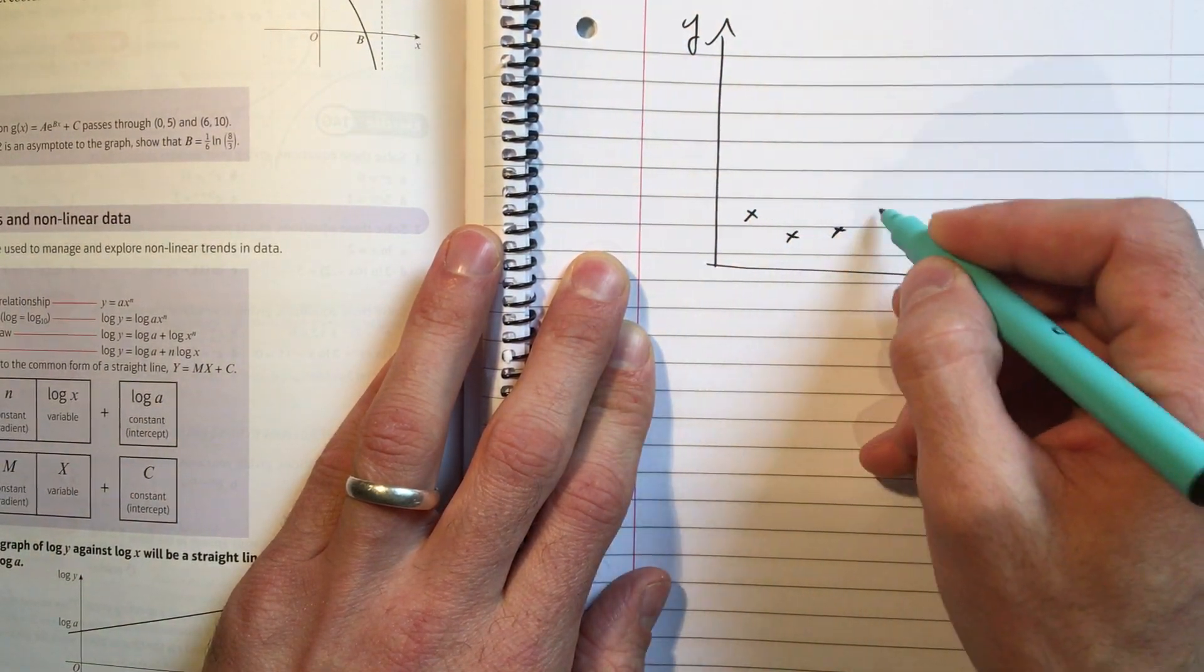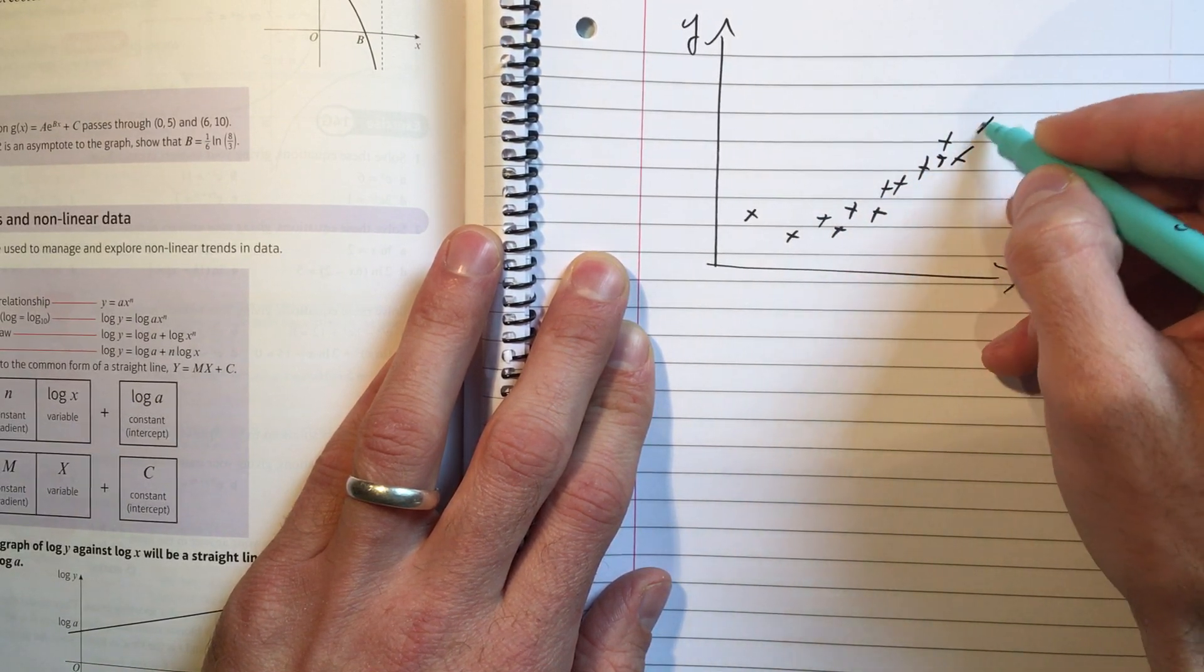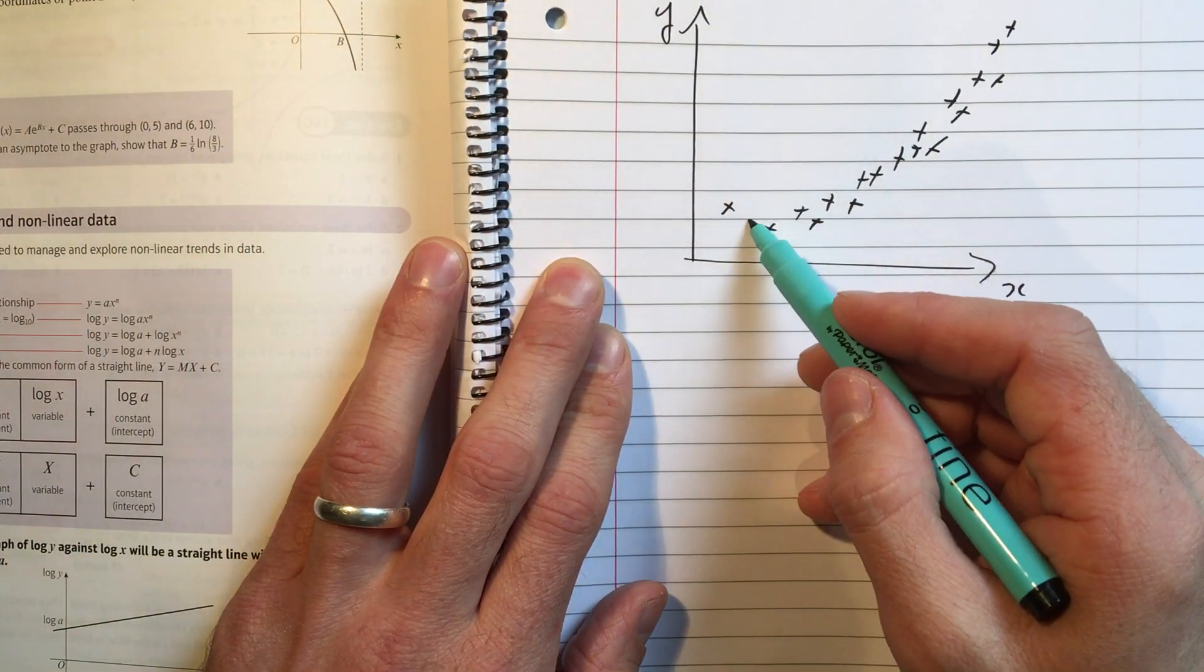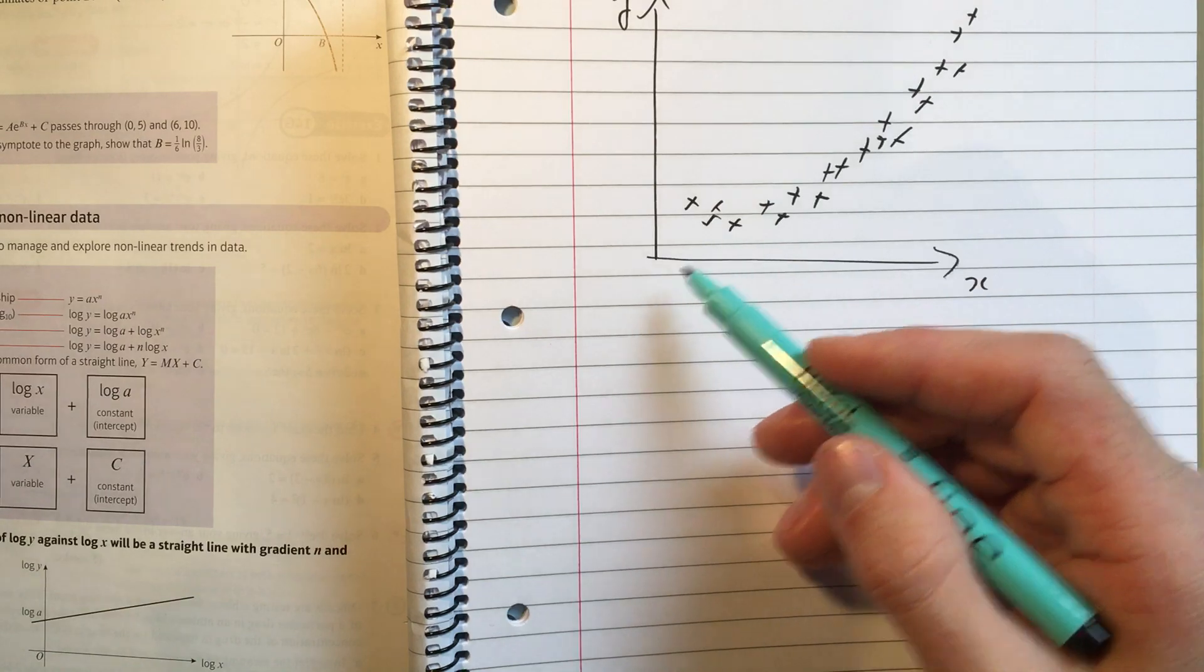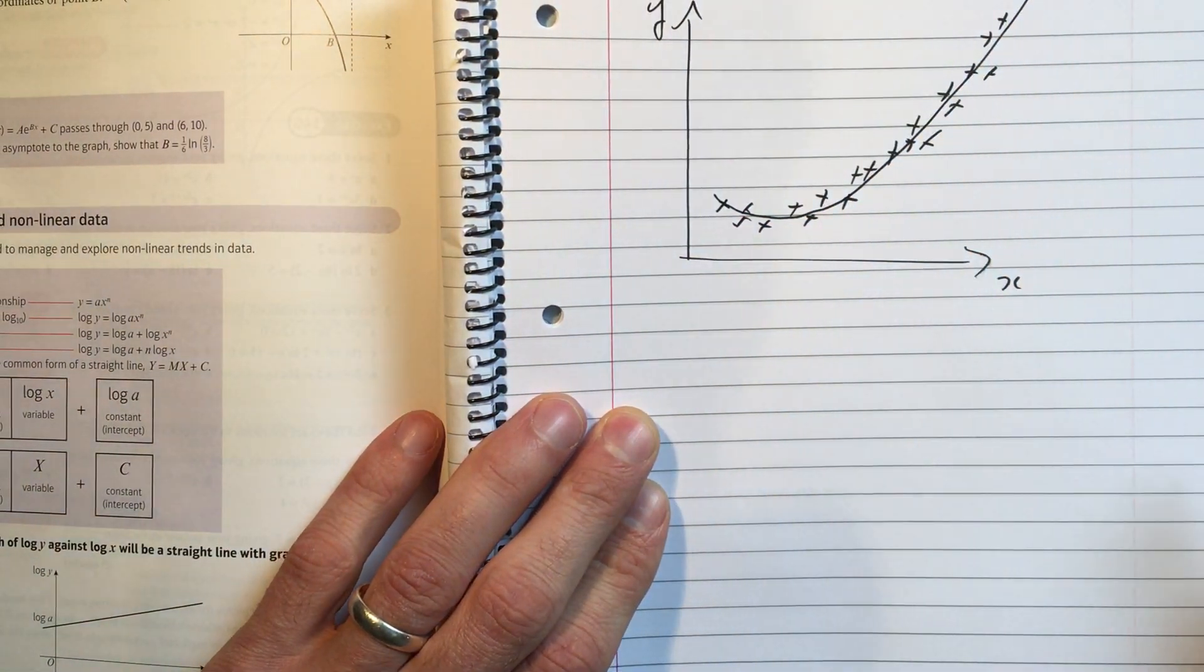So this is how it would work. Let's say I've got some data and it looks like this. So this is real-life data. I've measured two things, x and y, and I've got this thing. And you're looking at that and you're thinking, well, it's not a straight line, right? There's not a line of best fit here, but maybe there's a sort of curve of best fit that looks like this.